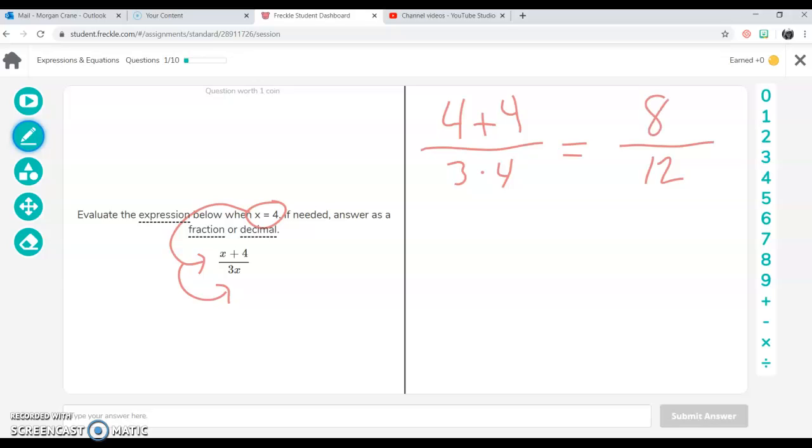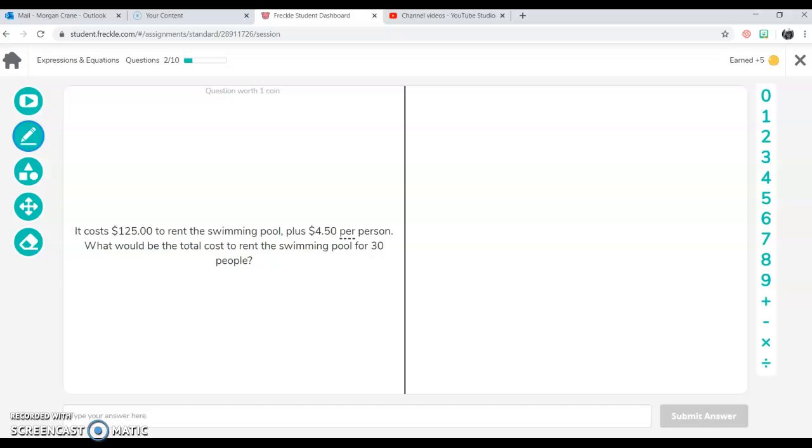So now we have our fraction 8 over 12. I'm going to reduce that down because they're both even. So let's start at 2 and see where we go from there. 8 divided by 2 is 4, 12 divided by 2 is 6. And again, we have another even set of numbers. So we're going to divide by 2 again. 4 divided by 2 is 2, 6 divided by 2 is 3. So now we know that our answer is 2 thirds. So I'm going to put 2 slash 3 and we get it correct.